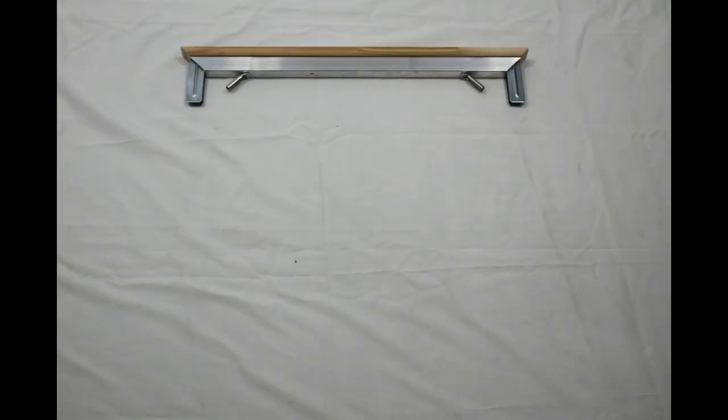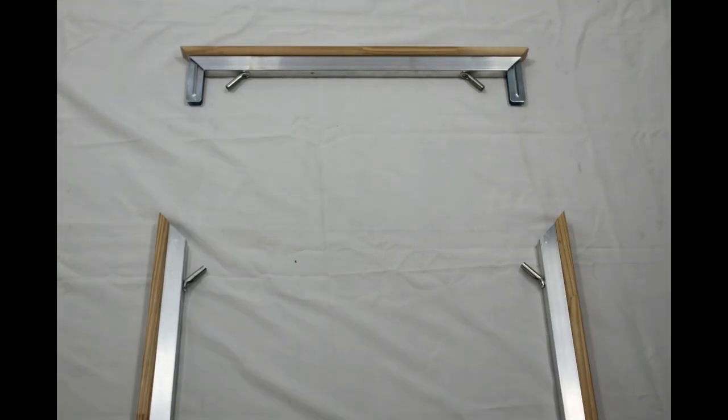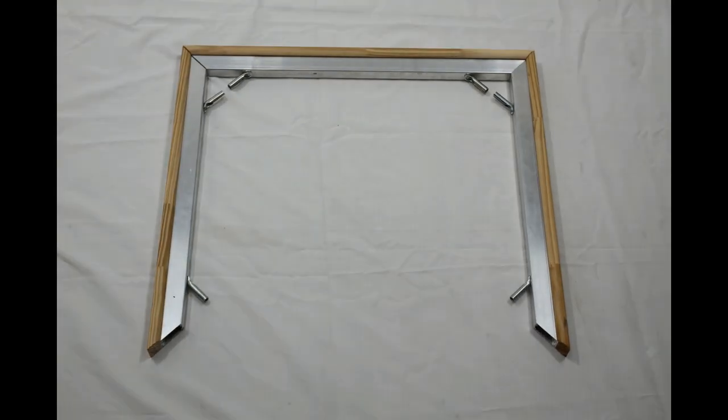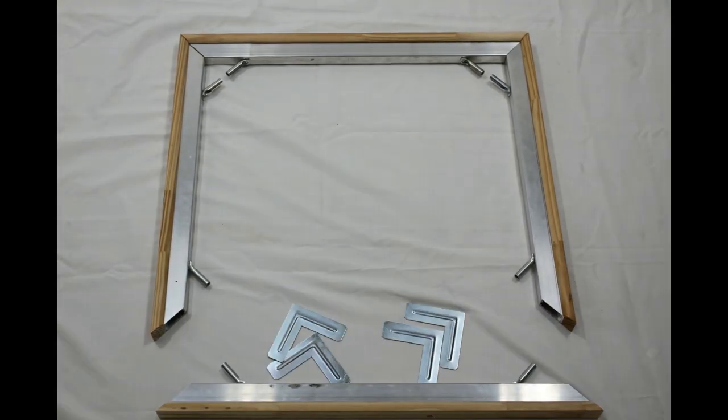The recycled aluminum inner frame keeps the outer wood frame from warping, expanding, or shrinking. As well, the corner braces allow for fine-tuned adjustment of tension on the canvas.